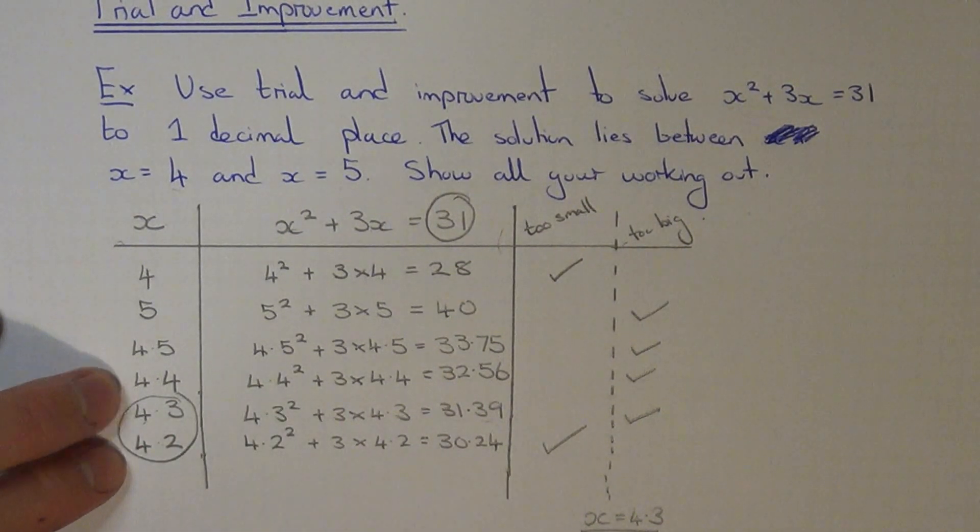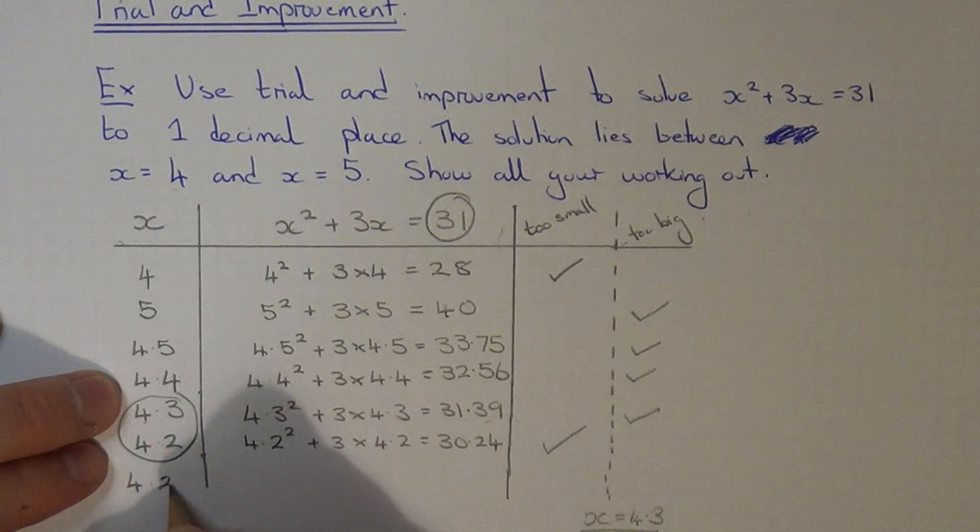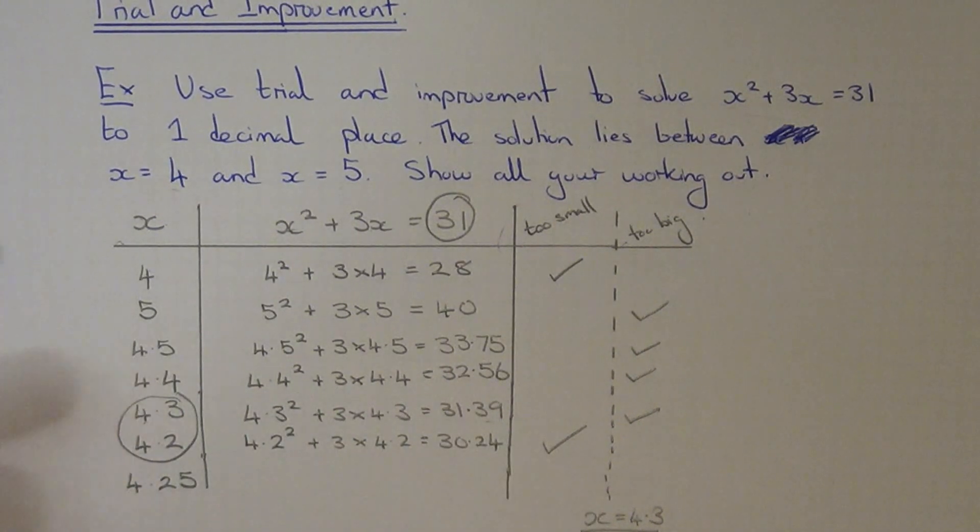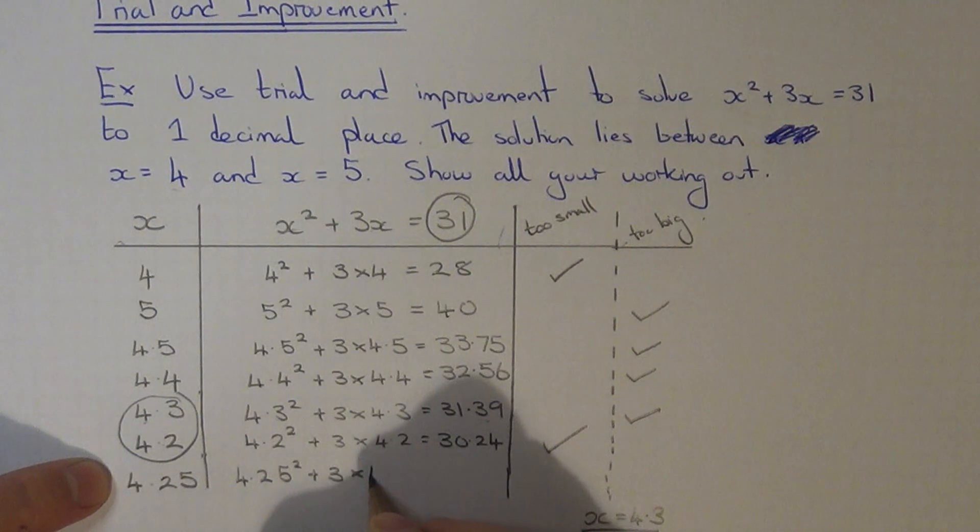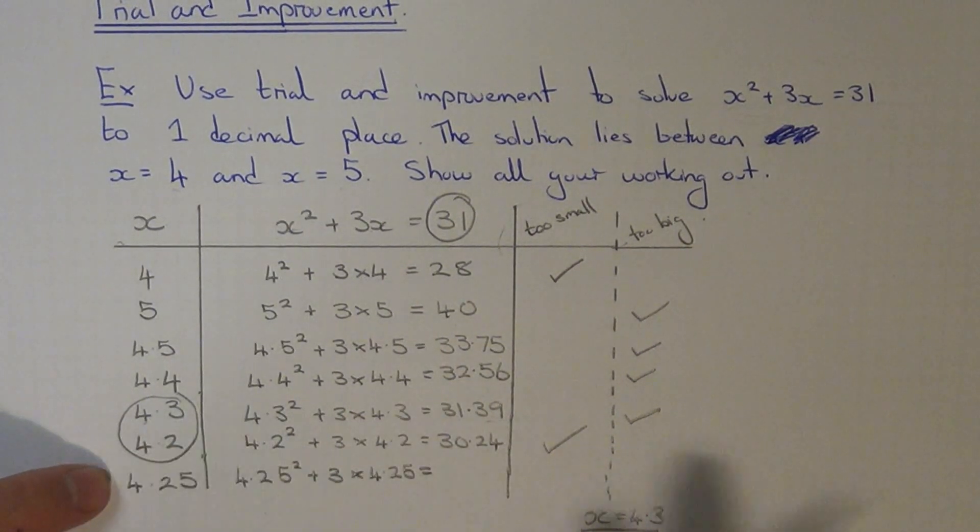So we have to go halfway between these two numbers and show 4.25. Whatever you do though don't write this down as your final answer. So this step is only here to help you decide which one of these two was the closest.